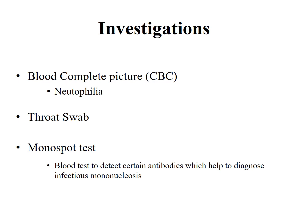For investigations, a complete blood picture is done first, which will show an increased WBC count, mainly neutrophilia. The diagnostic test is a throat swab for culture and sensitivity, which will identify the infective organism. In some cases, a monospot test — a blood test to detect certain antibodies — may be needed to help diagnose infectious mononucleosis.